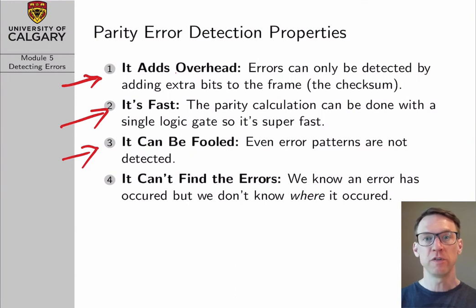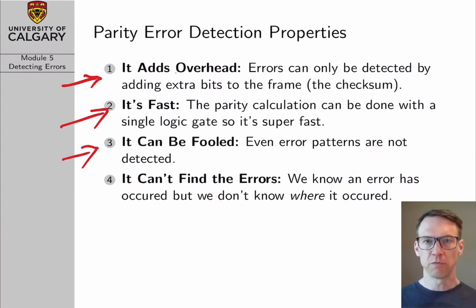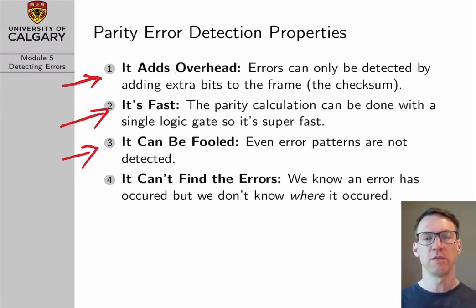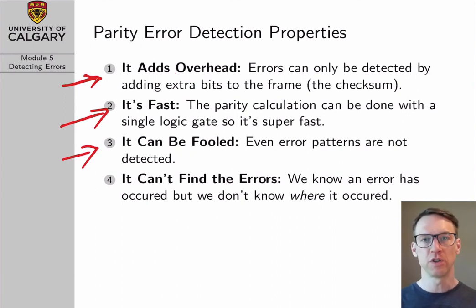This is also a fundamental property of all error detection schemes. With more sophisticated schemes, we can get the probability of missing an error pattern down to a very, very small number — to the point where we can practically say we can live with this performance. But there's no such thing as an error detection scheme that will always detect all possible error patterns. Error detection schemes are a sufficient condition for proving that there are errors in the packet, but not necessary. If the scheme indicates an error, we know for sure there's an error. If it does not indicate an error, we can be quite confident the packet is okay, but we're never going to know for sure.